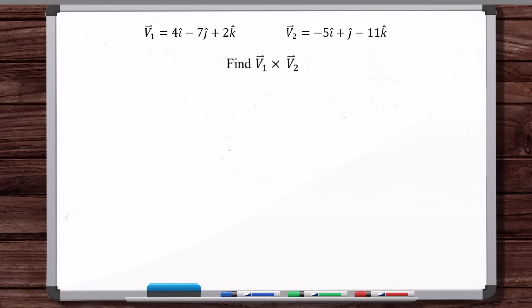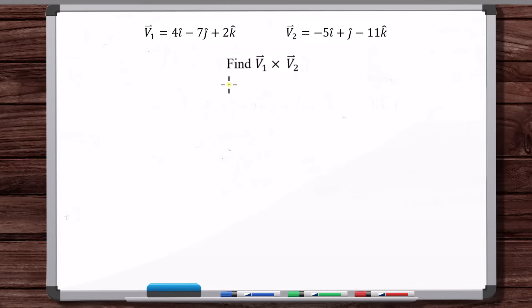In this video, we're going to find the cross product of two vectors using two different methods. The first method is the way I like to do it — I'm not sure where I learned it, but I like it because you don't have to memorize anything and it's intuitive. The second method is the standard determinant definition of the cross product. So let's start with the method I like. We've got two vectors, V1 and V2, and we want to find V1 cross V2.